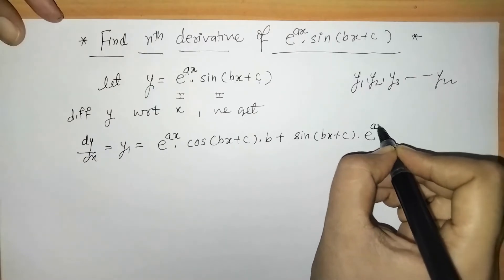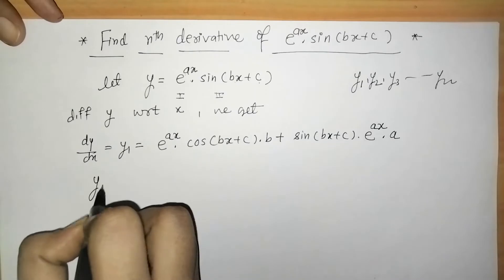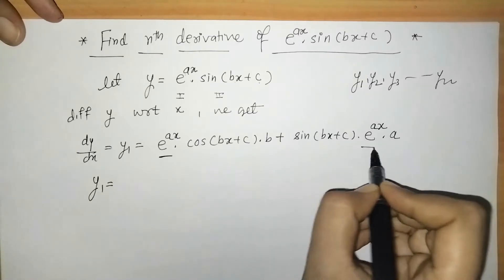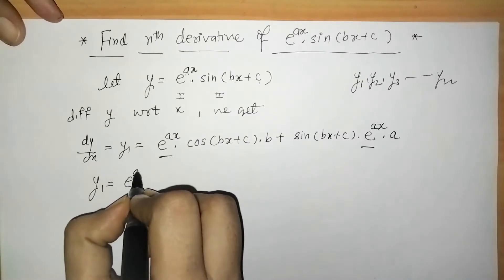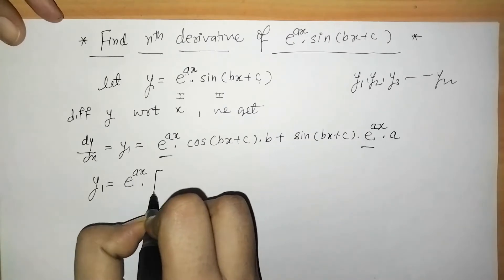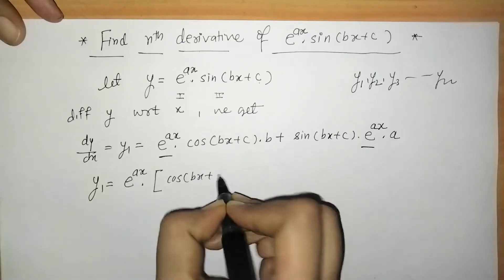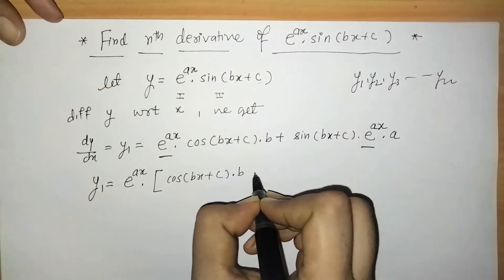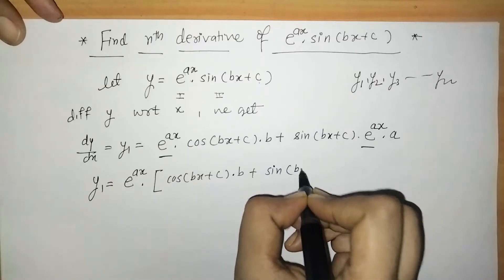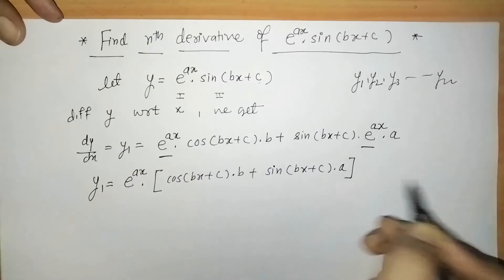Plus the second function as it is into the derivative of the first, which is e raised to ax into a. So we got the first derivative. Now e raised to ax is common so we can take it outside, giving: e^(ax) times [b·cos(bx+c) + a·sin(bx+c)].